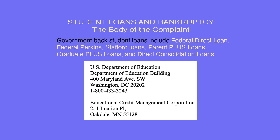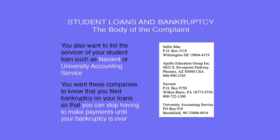Their addresses are the following: Educational Credit Management Corporation, PO Box 16489, Oakdale, Minnesota 55128. U.S. Department of Education, Department of Education Building, 400 Maryland Avenue SW, Washington D.C. 20202, 1-800-433-3243. You also want to list the servicer of your student loan, such as Navient or University Accounting Service. You want these companies to know that you filed for bankruptcy on your loans so that you can stop having to make payments until your bankruptcy is over.